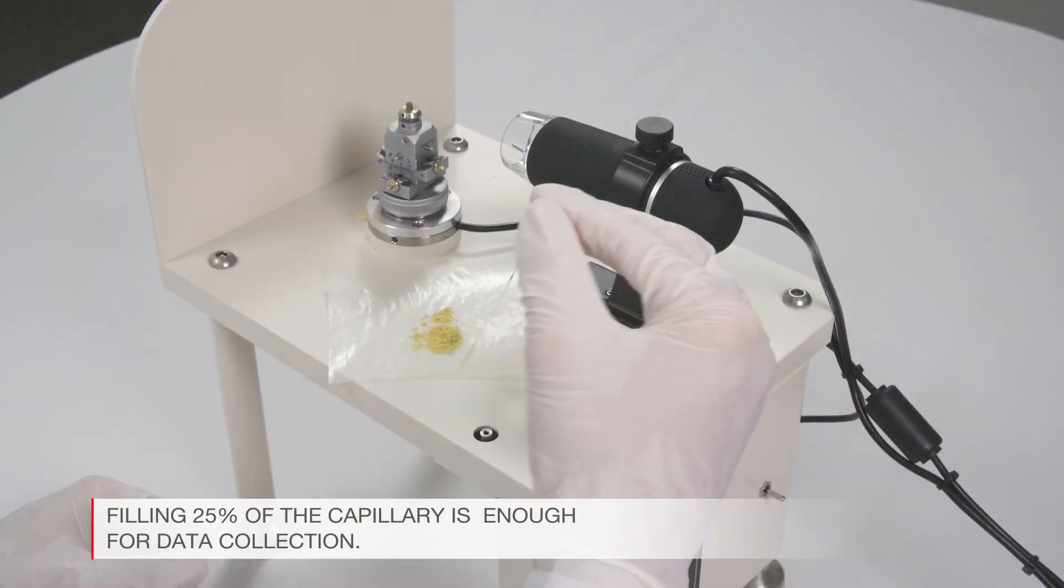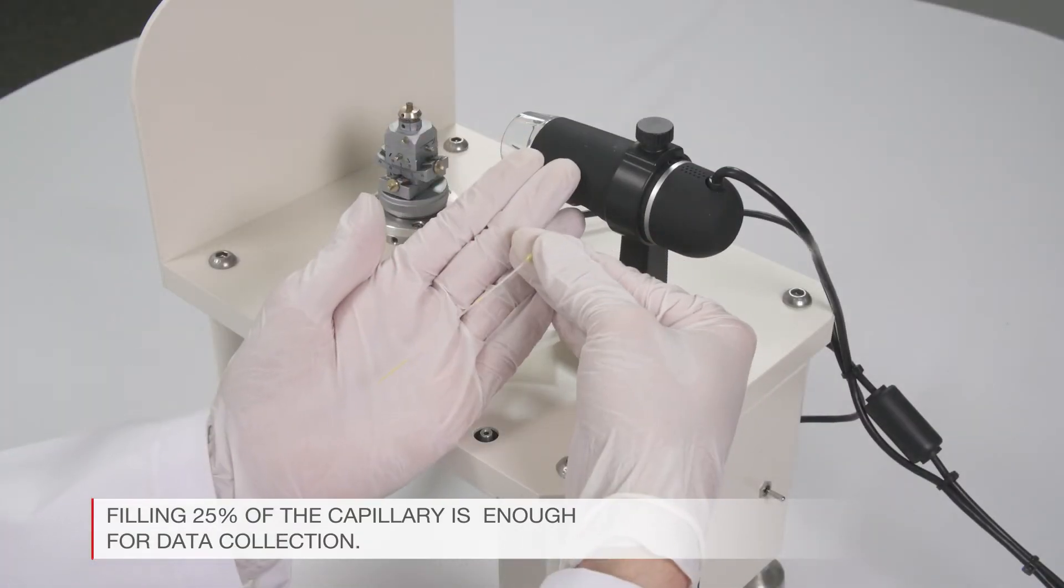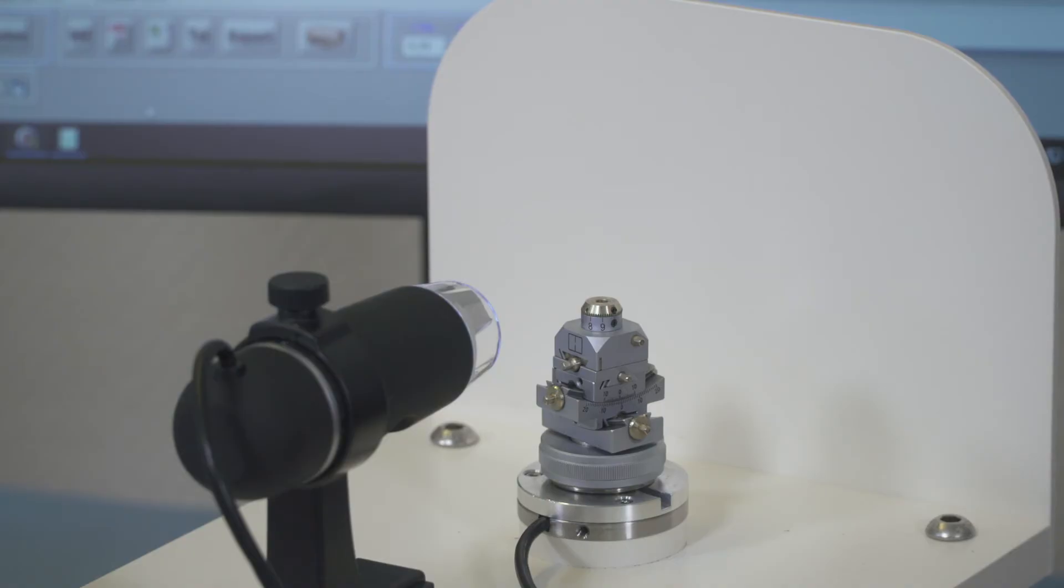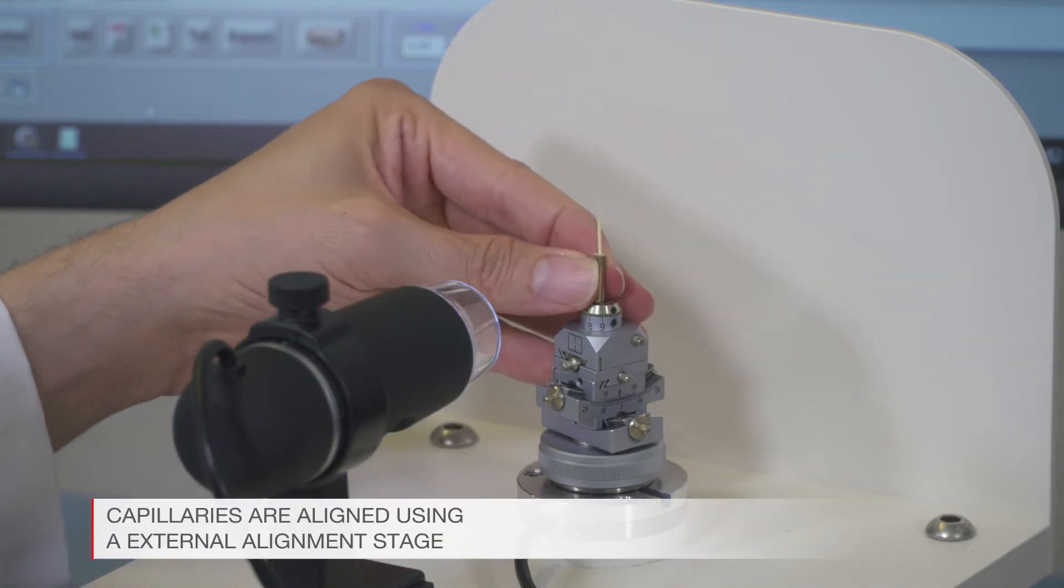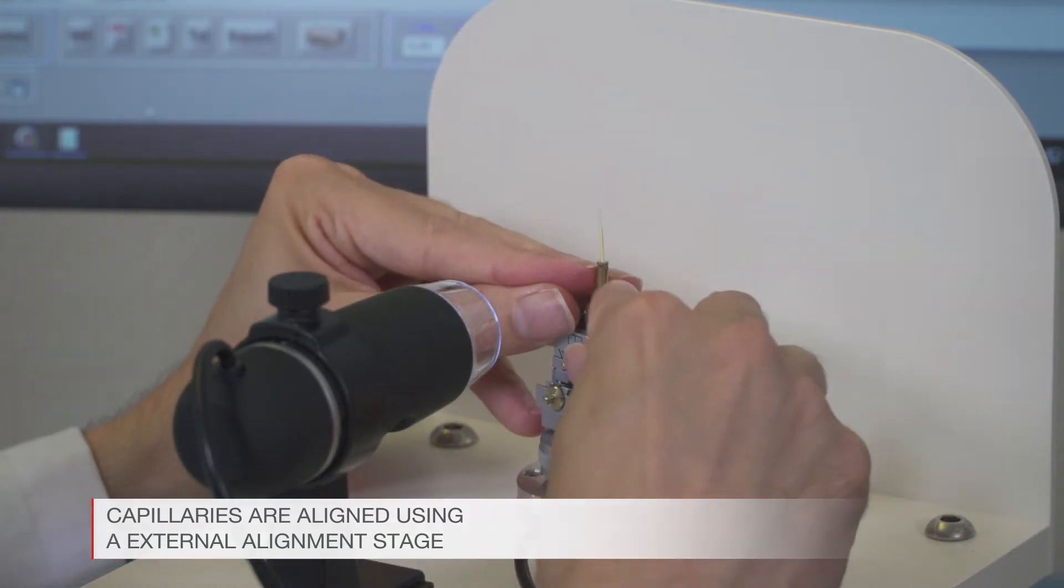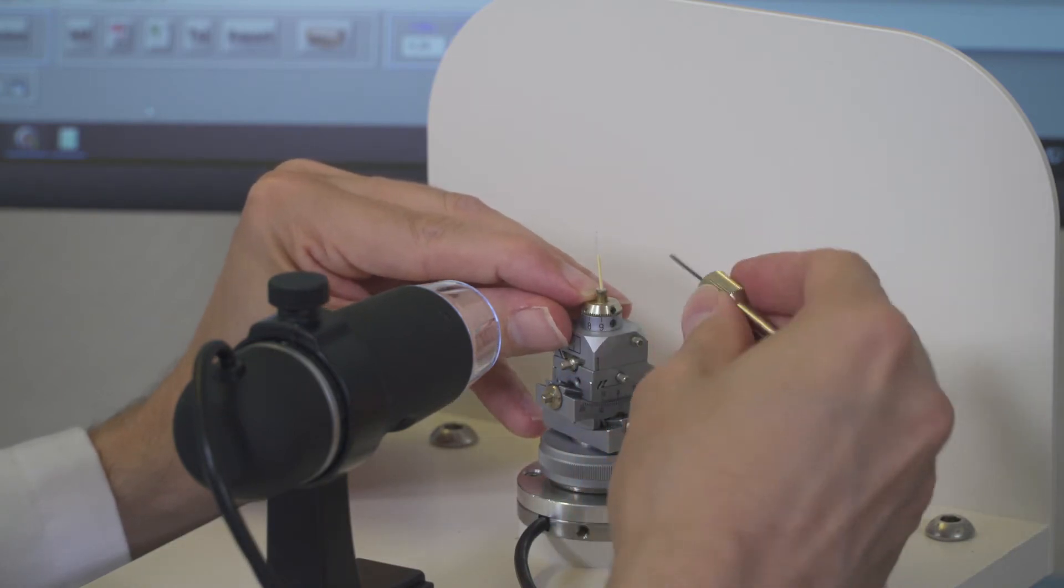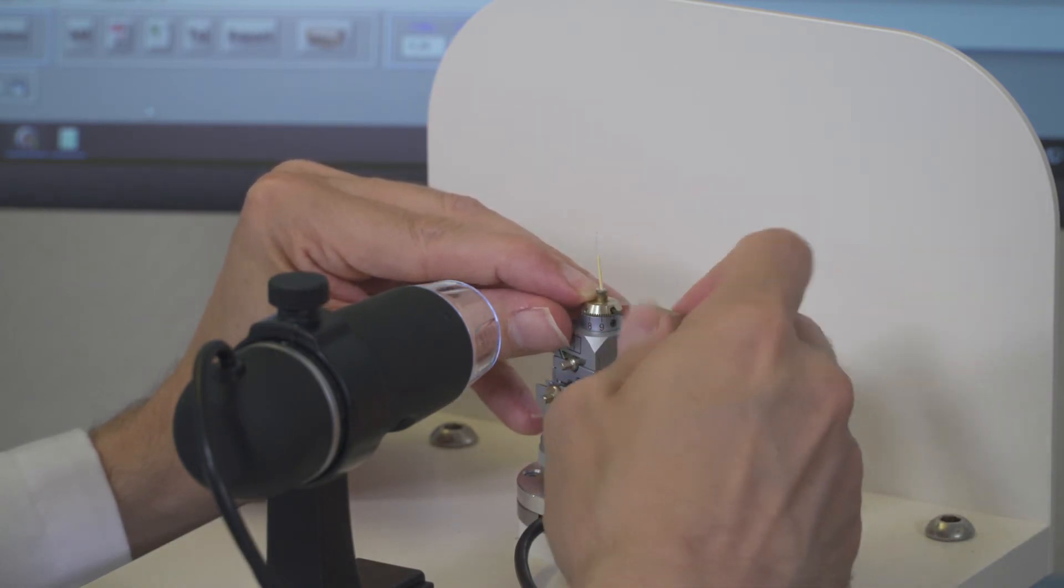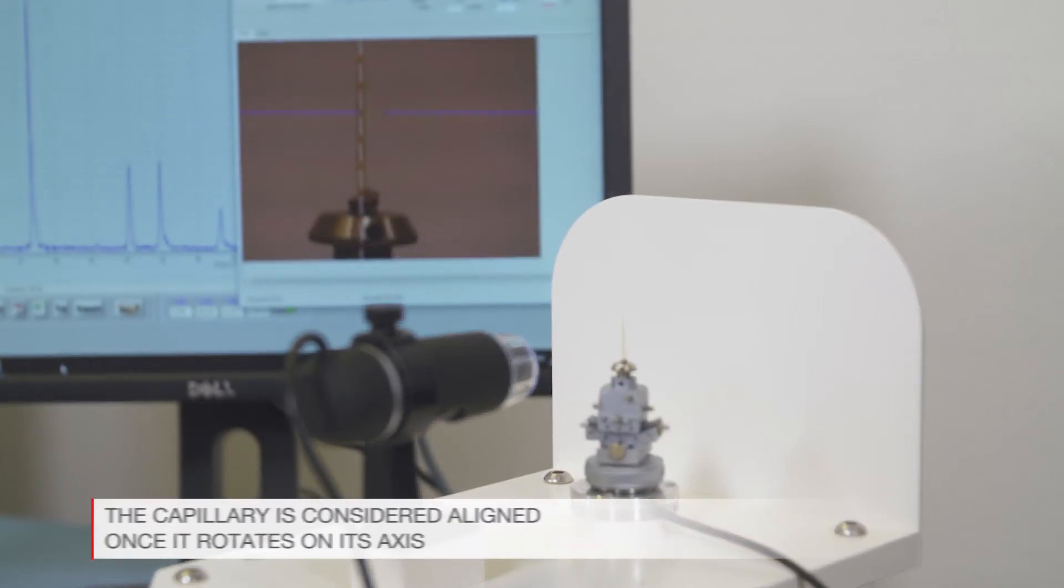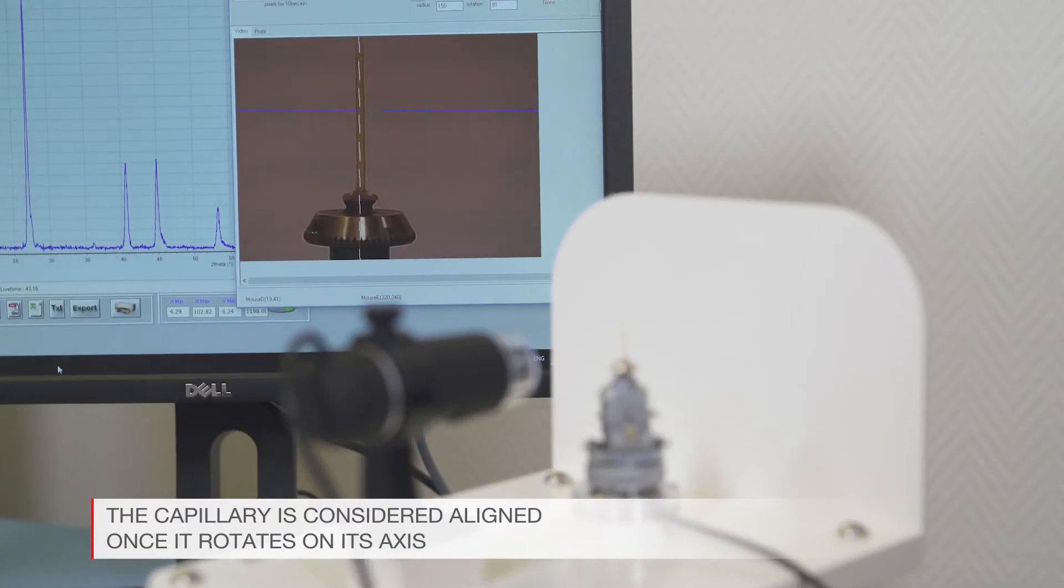Filling 25% of the capillary is enough for data collection. Capillaries are aligned using a goniometer head on an external alignment stage, using a video microscope interfaced with a computer. The capillary is considered aligned once it rotates on its axis.